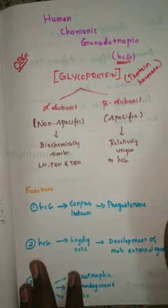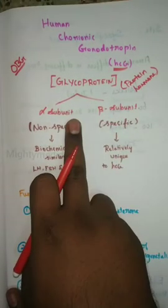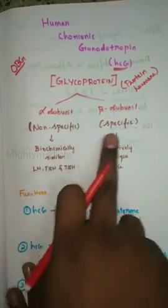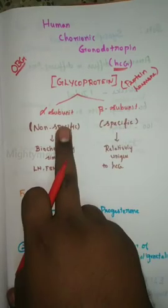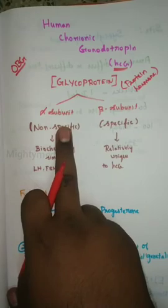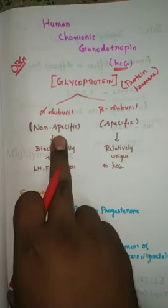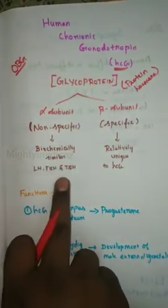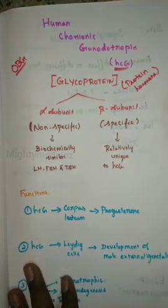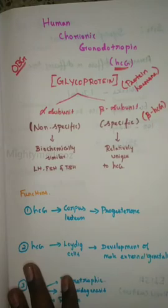There are 2 subunits: alpha subunits and beta subunits. Alpha subunits are non-specific and beta subunits are specific. Alpha subunits are present in any glycoprotein molecule — LH, FSH, TSH — and beta HCG. That is why we are talking about beta HCG, not just HCG.